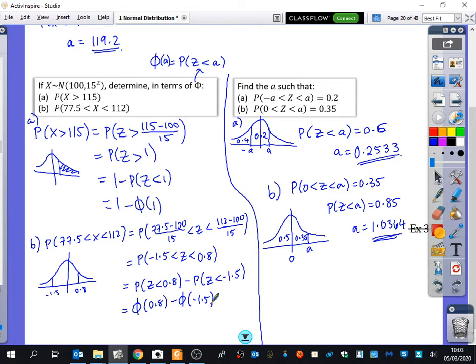These ones over here were kind of using logic skills. If it's between minus A and A, which is 0.2, well, it's symmetrical. So if this middle bit is 0.2, either end is going to be 0.4 because it's symmetrical. So the probability it's less than A, because that's what our calculator can access for us, is that A is less than, sorry, probability that Z is less than A is 0.6. These two bits added together. You can either do that in the calculator or you could use the table, but I prefer the calculator.